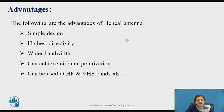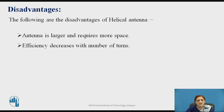Helical antennas are simple to design. They have the highest directivity along with a wider bandwidth. They can achieve circular polarization and can be used for ultra high frequency, very high frequency, and high frequency bands. Among the disadvantages, helical antennas have a larger shape requiring more space, and the efficiency decreases with the number of turns of the helical antenna.